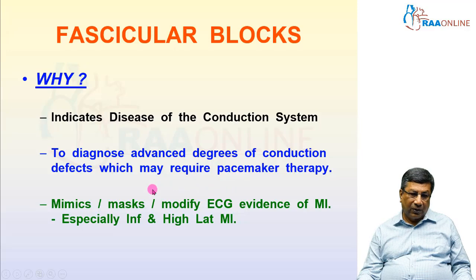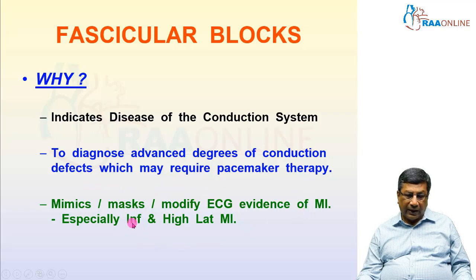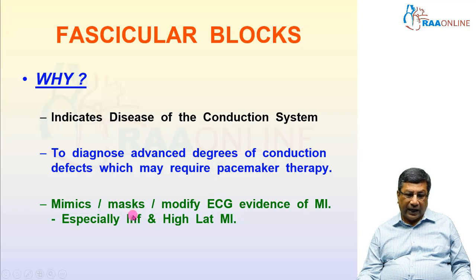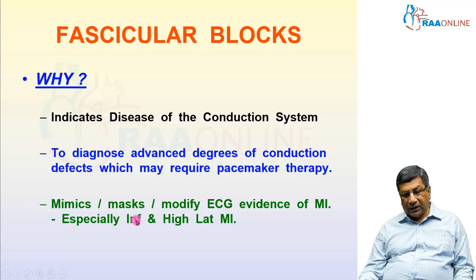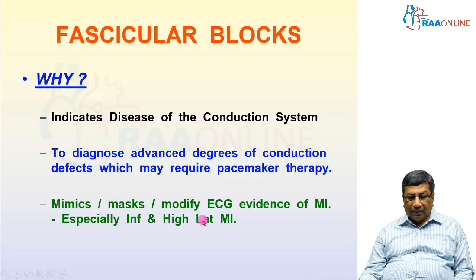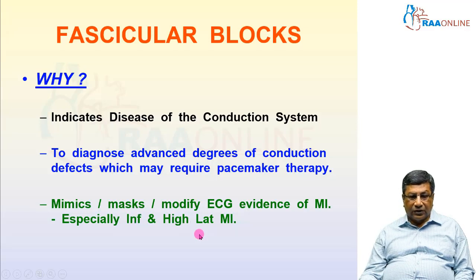Another important reason to know about fascicular block is that it can mimic, mask, or modify the ECG changes of myocardial infarction, especially inferior and high lateral myocardial infarction. Fascicular blocks produce changes in axis, and as discussed in the axis lecture, axis changes produce problems only in limb leads. The two infarcts that appear in limb leads are inferior infarction and high lateral myocardial infarction, and these can be masked, mimicked, or modified by an associated fascicular block, making it difficult to diagnose associated inferior or high lateral infarction.